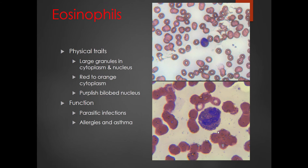Eosinophils tend to have really large granules in both the cytoplasm and the nucleus. The Wright stain gives their cytoplasm a very distinct red-orange color that all other white blood cells lack. They have a bi-lobed purplish nucleus with lots of granules. The key identifying feature is that reddish-orange cytoplasm. Eosinophils help fight off parasitic infections — if you have a worm, you'll get a lot of eosinophils. They also play a role in allergic responses and asthma.